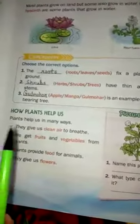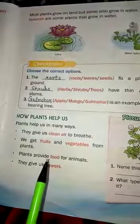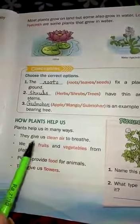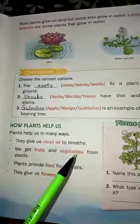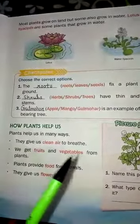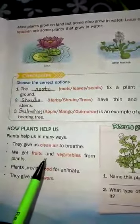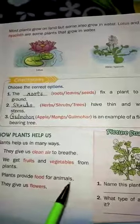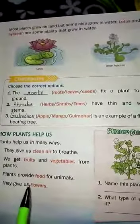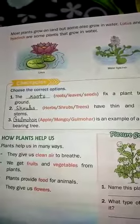Now the most important thing — how plants help us? Plants are very essential and very useful things for us. Plants help us in many ways. They give us clean air to breathe. We human beings need oxygen for breathing, and plants provide us this oxygen. Plants also make the air clean and fresh. We get fruits and vegetables from plants. Plants provide food for animals also. They give us flowers and shade as well.